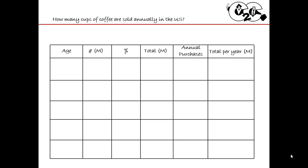Although this is just a market sizing question, I actually have a framework that I'm going to put in front of my interviewer: I'm going to break the group down by age, look at the total number of people, give a percentage of the people that even drink coffee, and then of those people, how many purchases they make in a year. I'm also going to make some overall assumptions. I'm going to say the U.S. population is about 320 million people and it's evenly distributed — meaning there are the same number of two-year-olds as there are 78-year-olds. Say that to your interviewer. You'll usually get a nod, but it's good to state it rather than just making the assumption in your head.